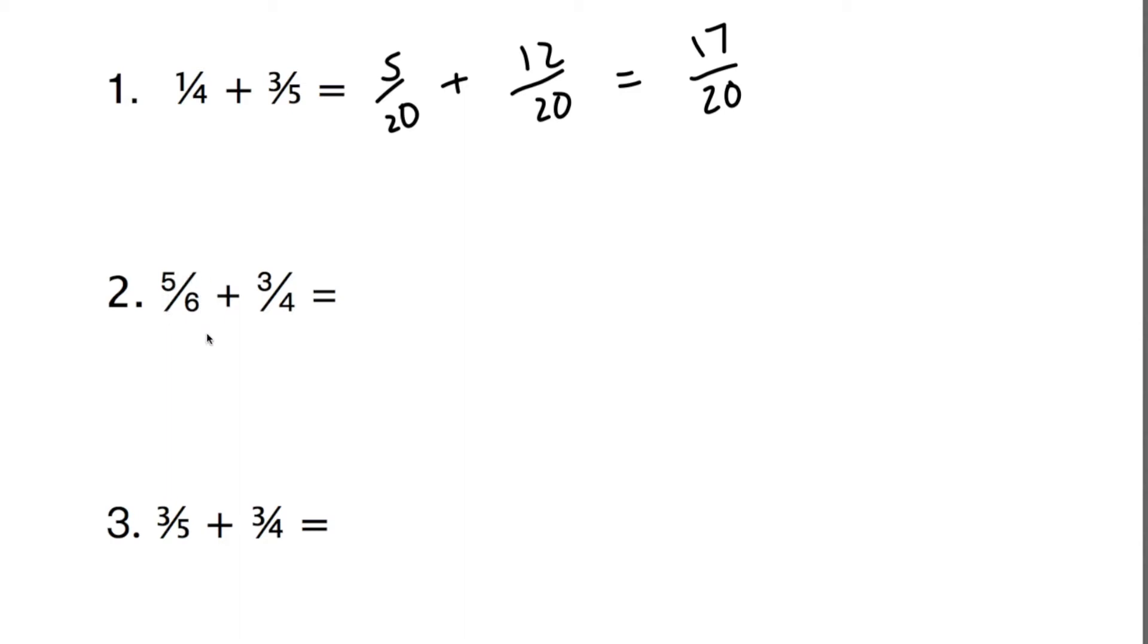So we could multiply five sixths by four to get twenty-fourths at the bottom. So if we were to do that, it would be twenty twenty-fourths. Plus, now we're going to need to multiply this by six, so three quarters multiplied by six, both the top and the bottom, is eighteen twenty-fourths. Now if we add those together, thirty-eight twenty-fourths.